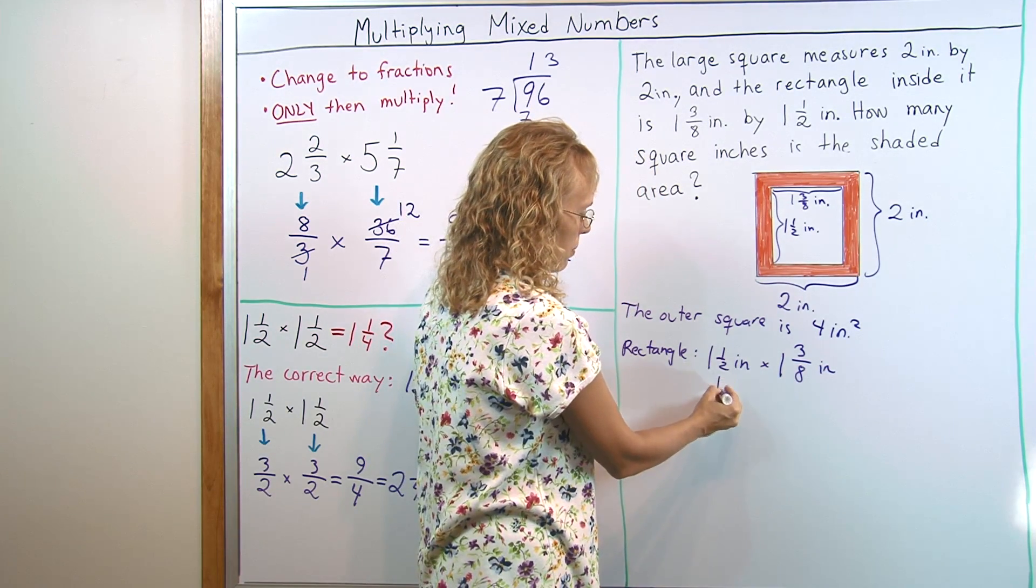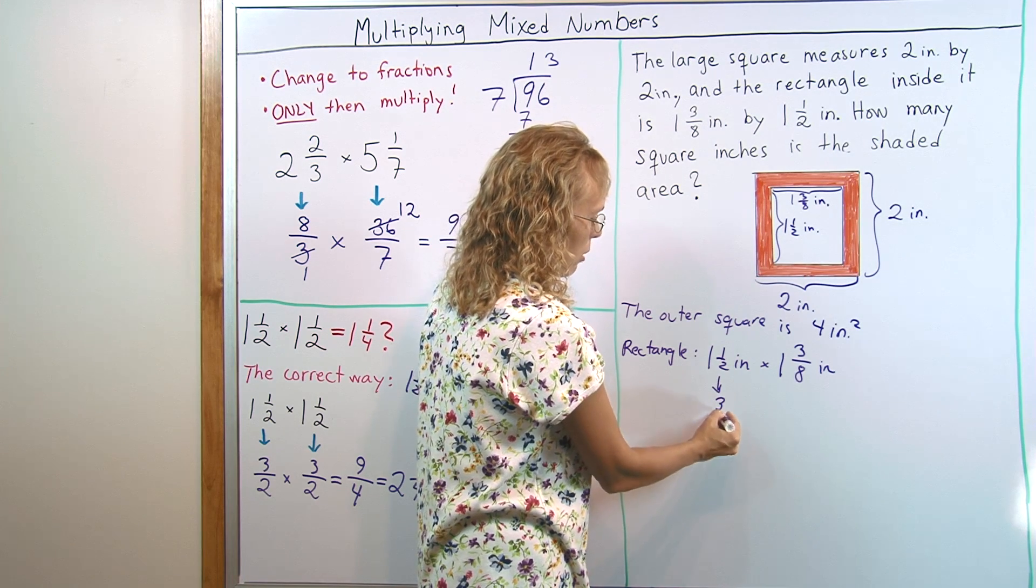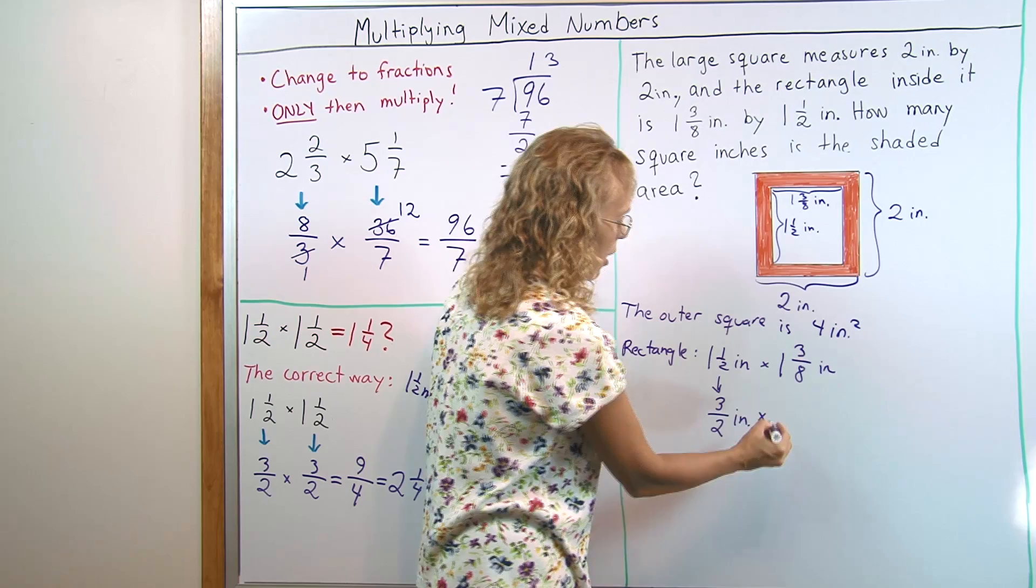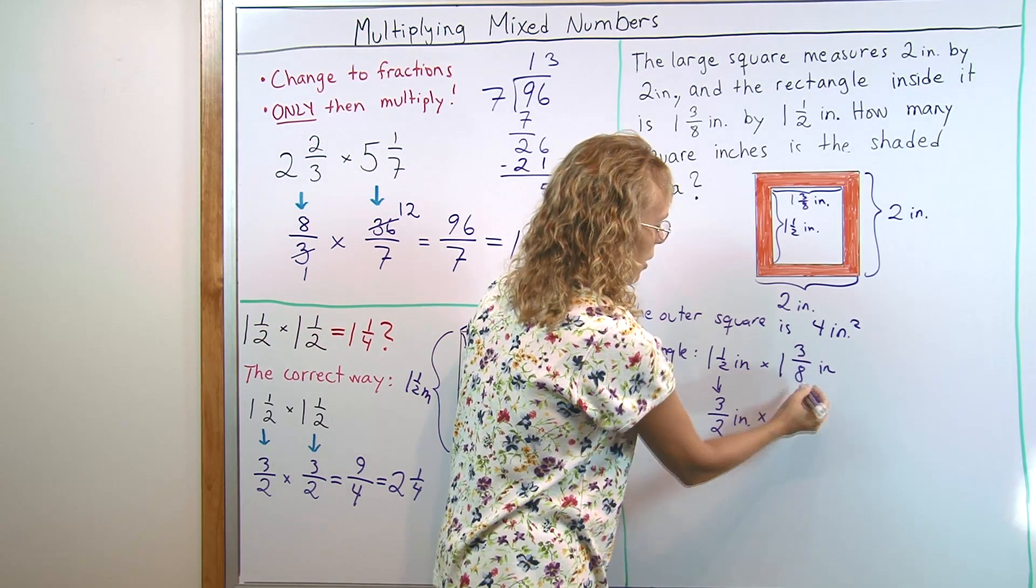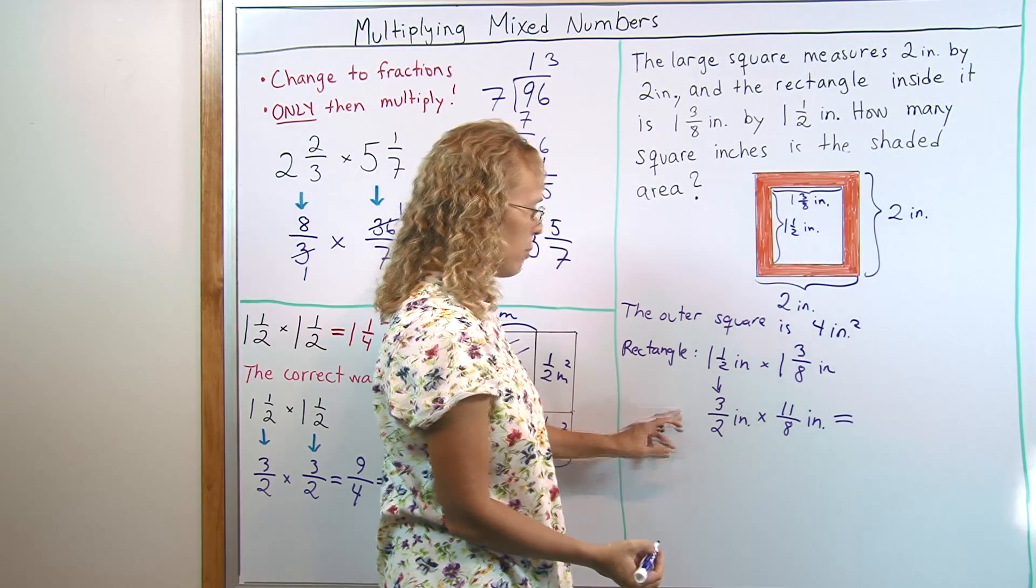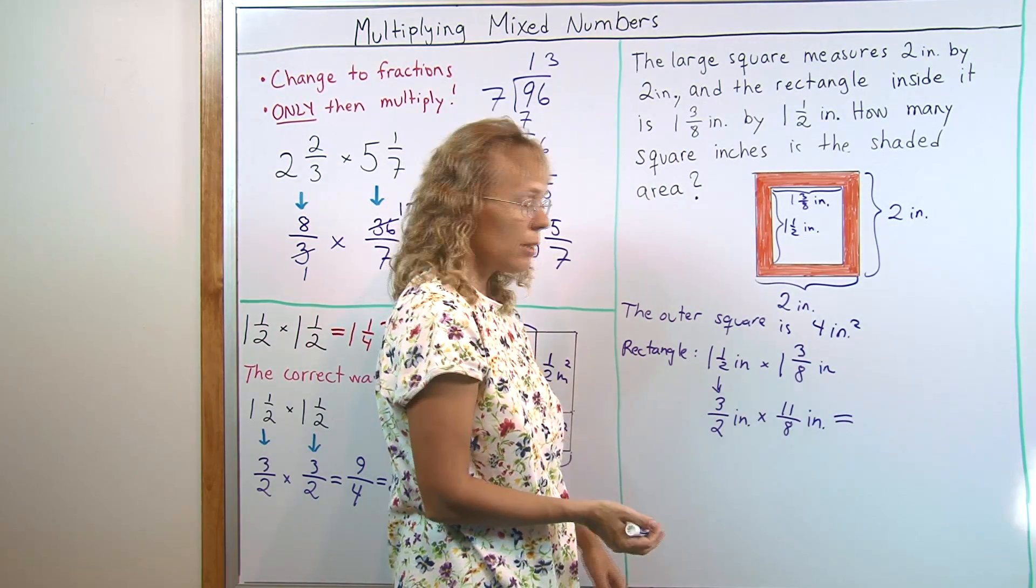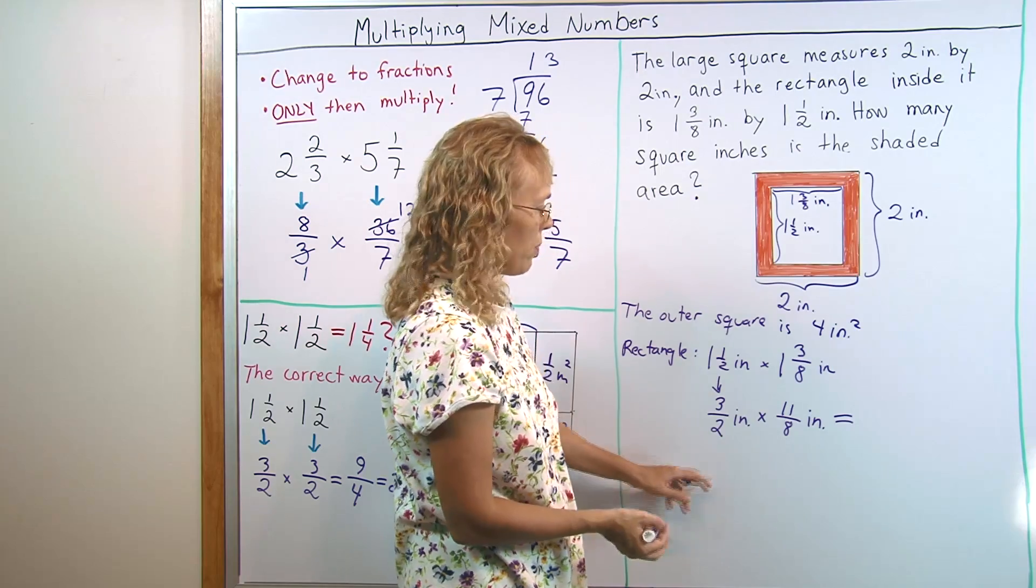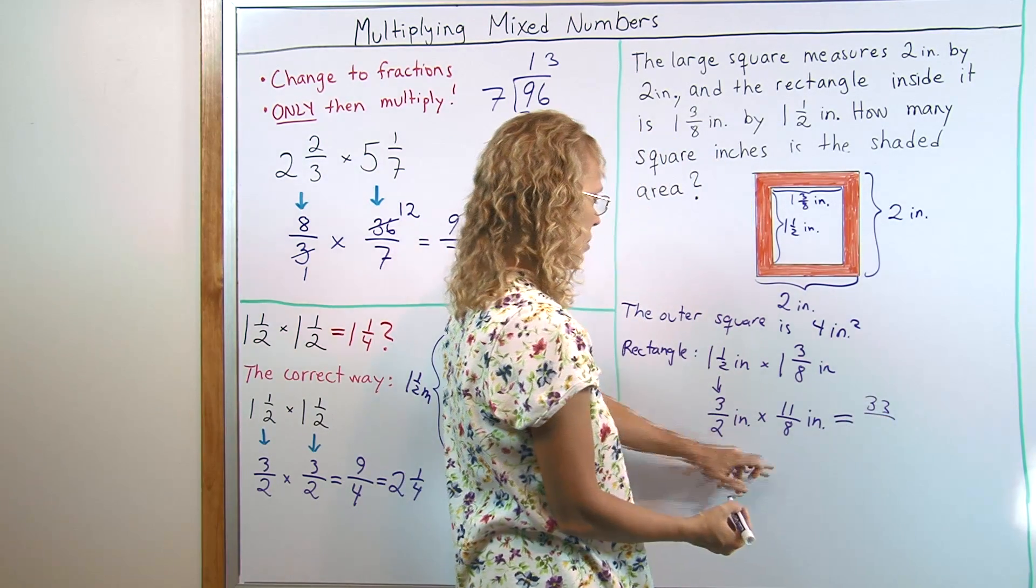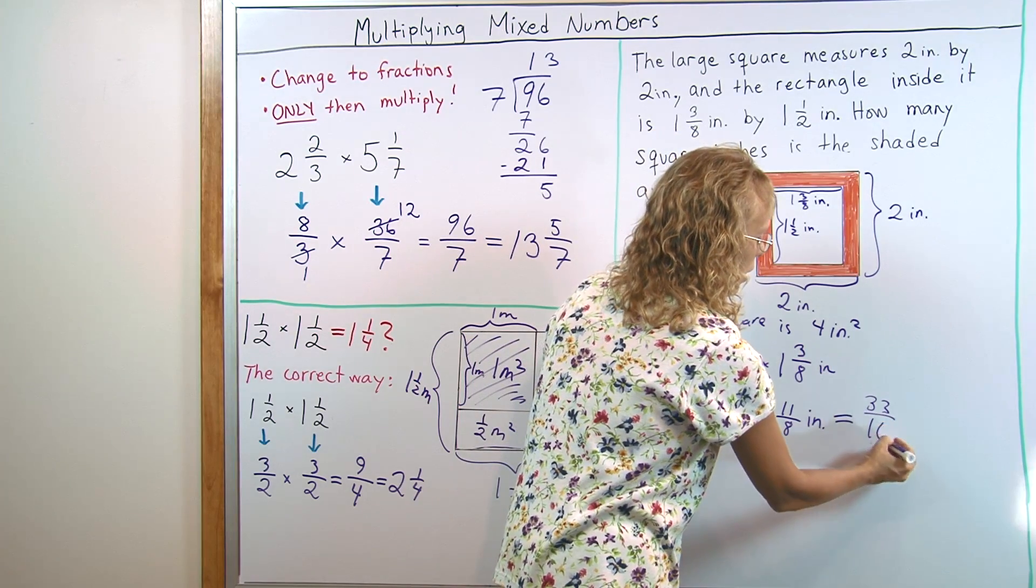Now, I'll change these to fractions. We have 3 over 2, 3 halves. Times, and here I get 11 over 8. Now, I can multiply, but let's check first if we can simplify. 3, 11, no. 3 times 11, 33. 2 times 8, 16.